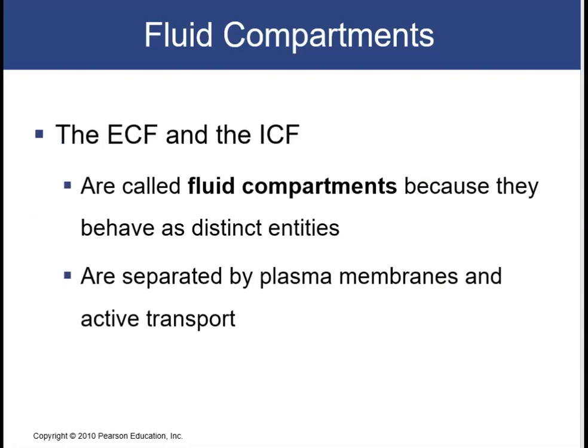The ECF and the ICF are called fluid compartments because they behave as distinct entities. They are separated by the plasma membrane and also by active transport. These two features allow the cells to maintain an internal environment with a composition that differs from their surroundings. So the electrolytes and materials inside of the cell can be very different from the extracellular fluid surrounding the cells.